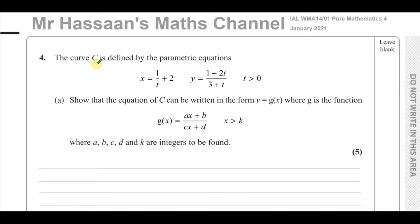The curve C is defined by the parametric equations x equals 1 over t plus 2, and y equals 1 minus 2t over 3 plus t, where t is greater than zero. We have to show that the equation of C can be written in the form y equals g(x), converting from parametric form into Cartesian form, where g(x) equals ax plus b over cx plus d, and x is greater than k, where a, b, c, d, and k are integers to be found.